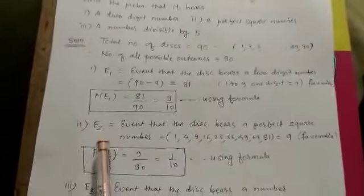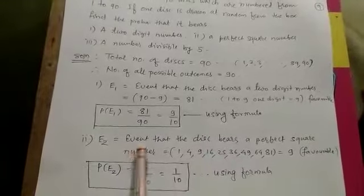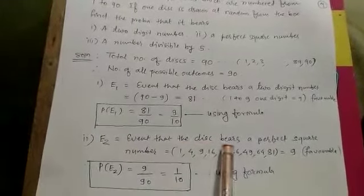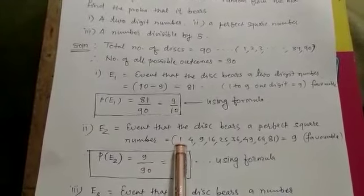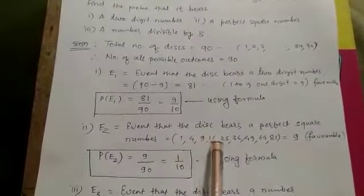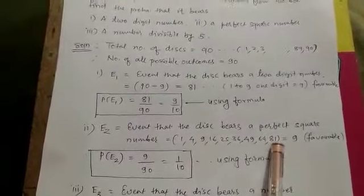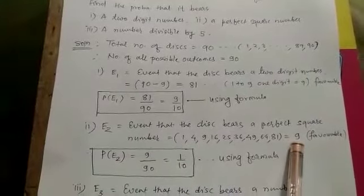Second case, we have to find the probability that the disc bears a perfect square number. The favorable outcomes are 1, 4, 9, 16, up to 81. This is total of 9 favorable outcomes.